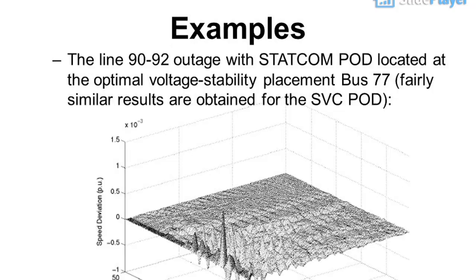The line 90–92 outage with STATCOM POD located at the optimal voltage stability placement bus 77 shows effective oscillation damping; fairly similar results are obtained for the SVC POD.